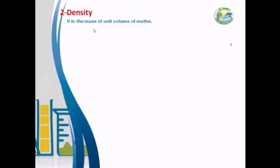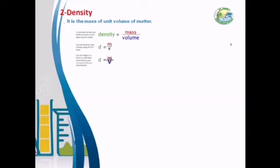So what is density? It means that if we want to measure the density of wood, we measure the mass of a cube of wood whose side length is one centimeter — that is one cubic centimeter — and that mass is the density of wood. Density equals mass divided by volume. Mass is measured in grams and volume is measured in cubic centimeters, so the measuring unit of density is grams per cubic centimeter.